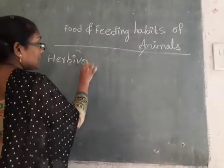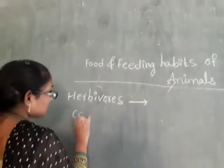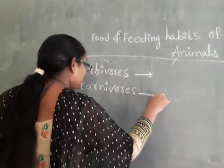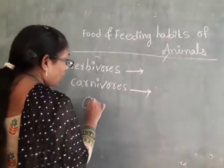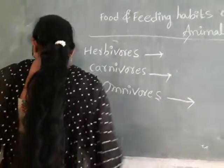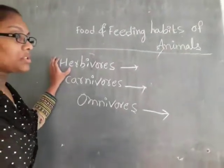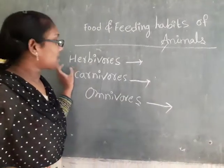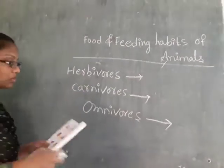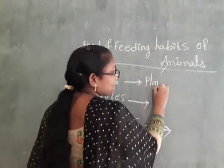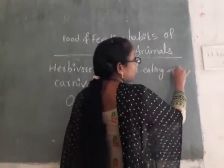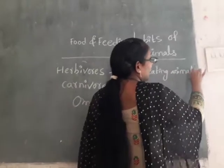Herbivores, carnivores, and omnivores — these are the three types. Animals like cows and giraffe are plant-eating animals. These all come under herbivores. Plant-eating animals are called herbivores.